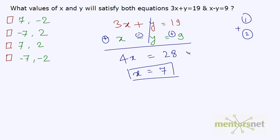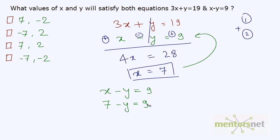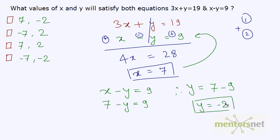Now you can put this value of x in equation 2 to get the value of y. Equation 2 is x minus y is equal to 9. x is 7, so 7 minus y is equal to 9. Therefore, y is equal to 7 minus 9, that is minus 2. So x is 7 and y is minus 2.